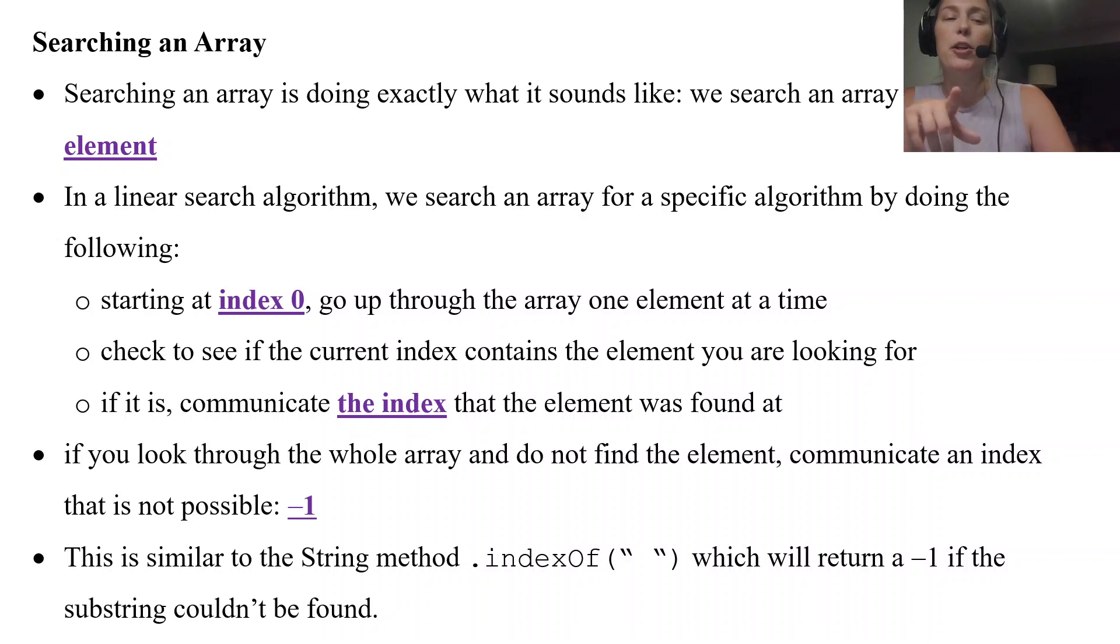This is very similar to the string method dot index of, and then in quotes we put what we are looking for in a string. That method returns a negative 1 if that substring or letter can't be found, otherwise it communicates the index where it is. The first location of it, and that's what's going to happen in our linear search algorithm.